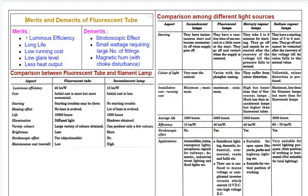If we consider the fluorescent lamp, we have to compare the advantages of this lamp. We have to compare the luminous efficiency — it is 40 lumens per watt. High luminous efficiency is the merit in comparison with the incandescent lamp. If we compare the sodium vapor lamp, we have to compare the power rating.